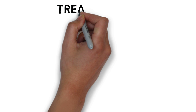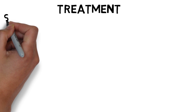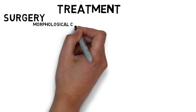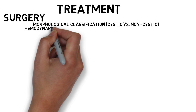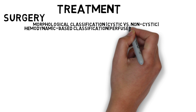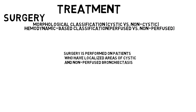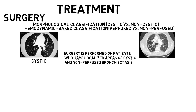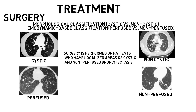Treatment — surgery: patients are selected for surgery based on morphological classification into cystic and non-cystic types. A haemodynamic-based classification, based on both morphological and functional features — perfusive and non-perfusive — has been proposed by some investigators. Surgery is performed on patients who have a localized area of cystic and non-perfusive bronchiectasis. A majority of patients achieve excellent results after surgery with minimal mortality and morbidity.